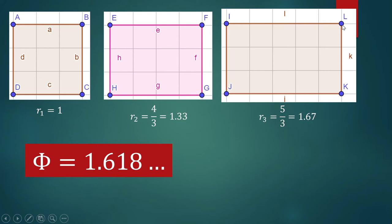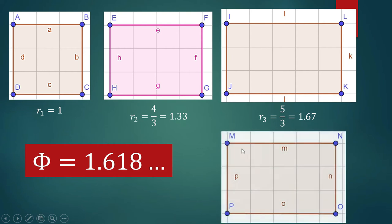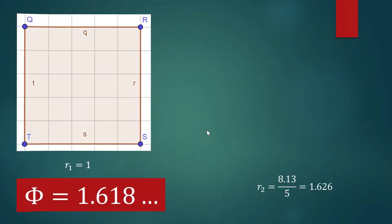We need to reduce 1.67 to something like 1.618, so I have to shorten this length. This side is a bit shorter than 5 — in fact, it is something like 4.8. The ratio of the longer side to the shorter side of this new rectangle is 4.8 over 3, which is 1.61. So this rectangle shows a proportion closer to the golden ratio, 1.618.